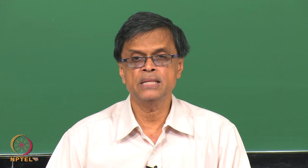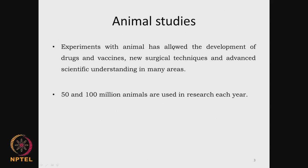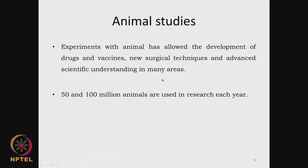They have to get permission from the animal ethical committee before experiments are carried out with animals. Animals are allowed for development of drugs and vaccines, and animals are used before they always go into human volunteer trials. And even when the clinicians or surgeons are looking at new surgical techniques, trying to understand certain new concepts, then they have to perform on animals.